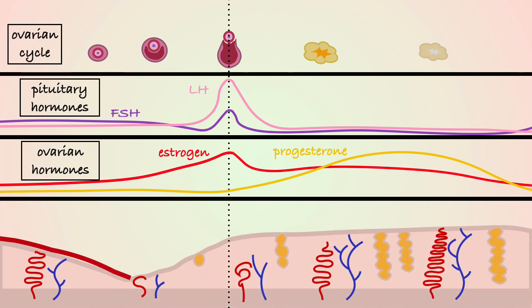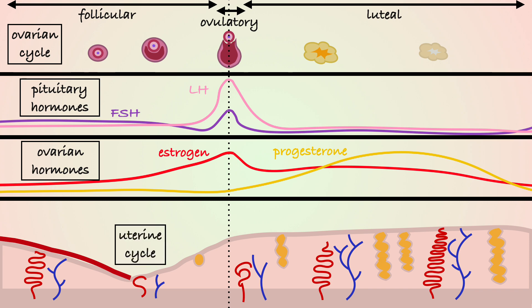The ovarian cycle, also the most widely known, consists of three phases: follicular, ovulatory, and luteal.